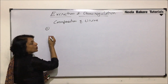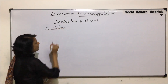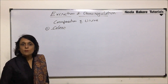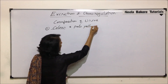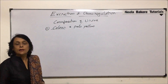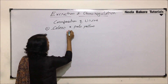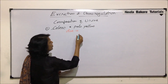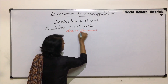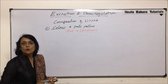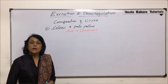Starting with color — the color of urine is normally pale yellow. This pale yellow color is due to the presence of a pigment called urochrome. Urochrome is the pigment responsible for providing this pale yellow color.